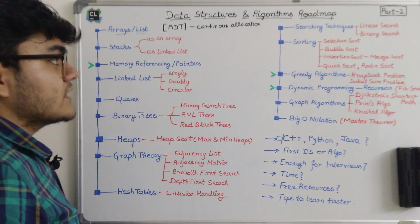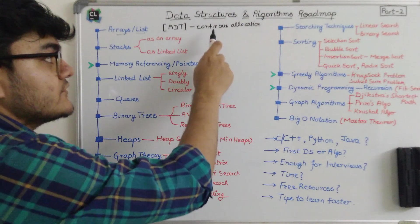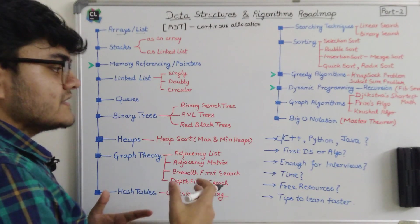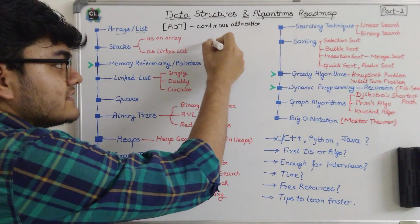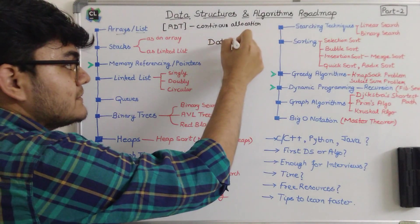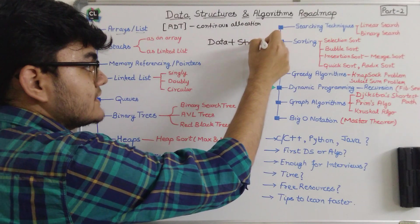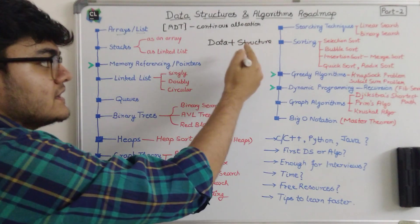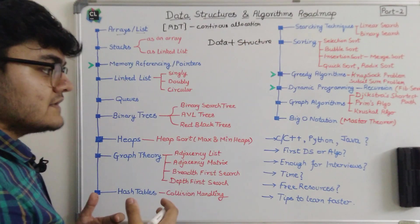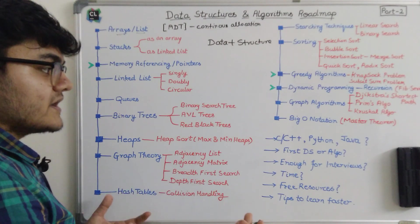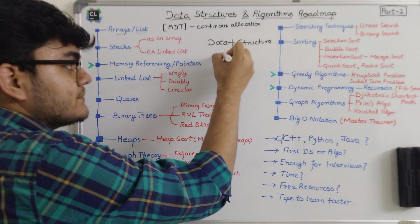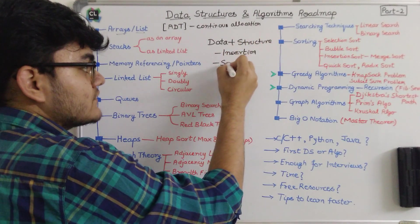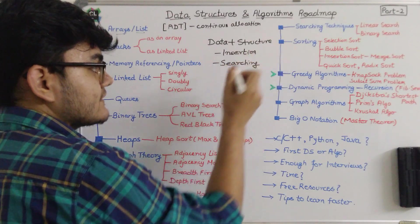The most important thing is you should know how an array is allocated inside memory. All data structures are basically data with some defined structure. The reason we have so many data structures is that for different types of data we can have different structures, which give us different time complexities for different operations — for example insertion, searching, and deletion.